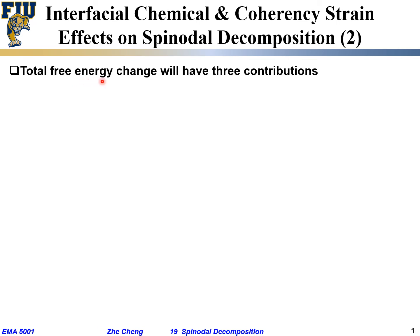The total free energy change during spinodal decomposition has three contributions. The first term is due to the volume free energy for a uniform composition versus a fluctuated composition: one-half times the second derivative of free energy with respect to concentration, times the fluctuation concentration squared. This is our driving force term.